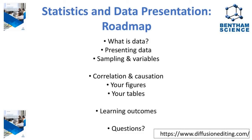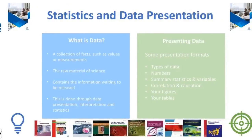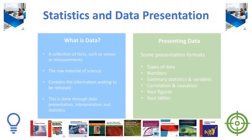So what is data? A collection of facts, values, or measurements — the raw material of academic research and science — containing information that we as researchers are going to extract. This extraction step is done through data presentation, interpretation, and statistical analysis. There are a number of presentation formats we'll touch on today, including types of data, numbers, summary statistics and variables, correlation versus causation, and how you can present this information effectively in your articles, figures, and data tables.